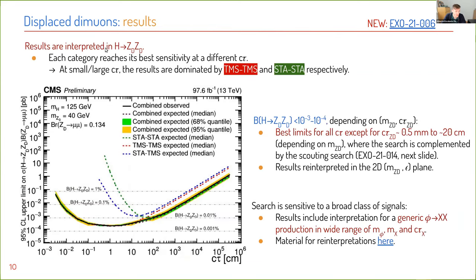The results are interpreted in terms of X to a pair of dark photons, shown as signal rate versus lifetime, with different curves for each dimuon category. At high displacement, the STA dimuon search covers long lifetimes; at short lifetimes, TMS dimuons dominate. The final combined result is shown in black, demonstrating that with this multi-category approach, we cover many orders of magnitude in displacement. The reach ranges between branching ratio of H to dark photons of 10^{-3} to 10^{-4}, depending on mass and lifetime — the best limits for all c*tau except the typical tracker lifetime, where this search is complemented by scouting.